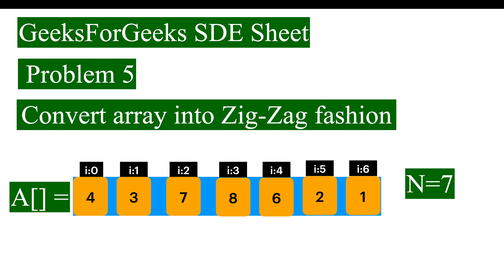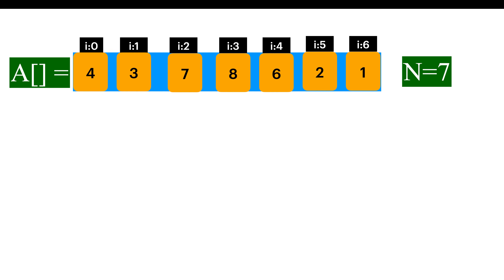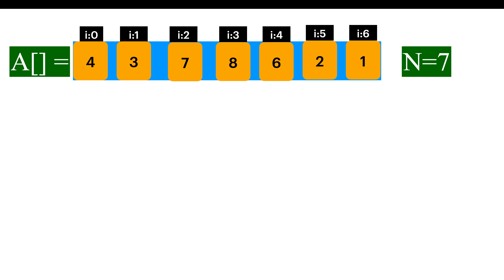Hello everyone. Let's solve problem 5: convert array into zigzag fashion. Let's understand the problem statement. You will be given an array and a sort property. You need to rearrange the elements based on that sort property.